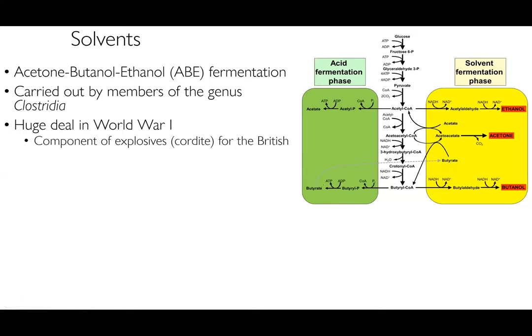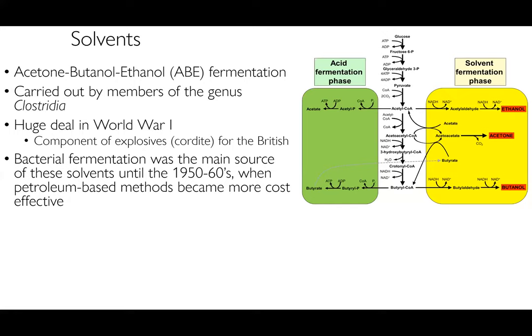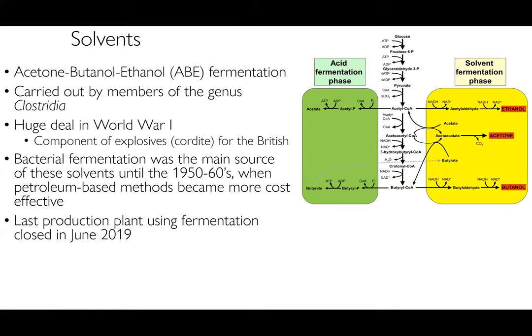Bacterial fermentation was the main source of these solvents until the early 1960s, when petroleum became a more cost-effective way to make these products. The last production plant using fermentation of these solvents actually closed in June 2019. This fermentation approach was actually a much less harsh and more environmentally friendly way of producing these important solvents — slightly more expensive than using petroleum, but much more environmentally friendly, since petroleum is a really dirty process for the environment as a whole.